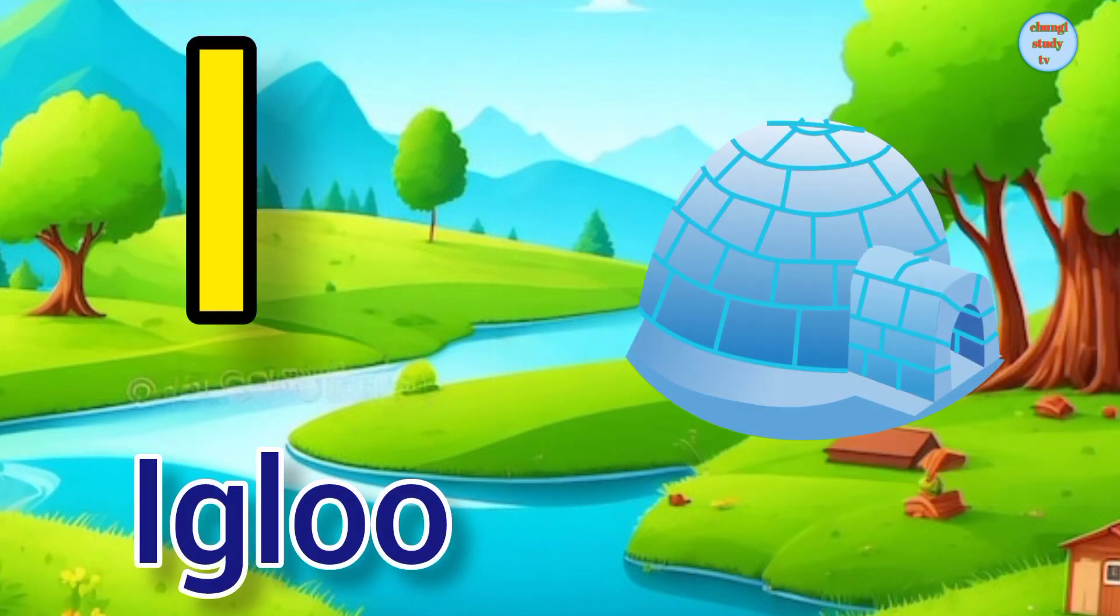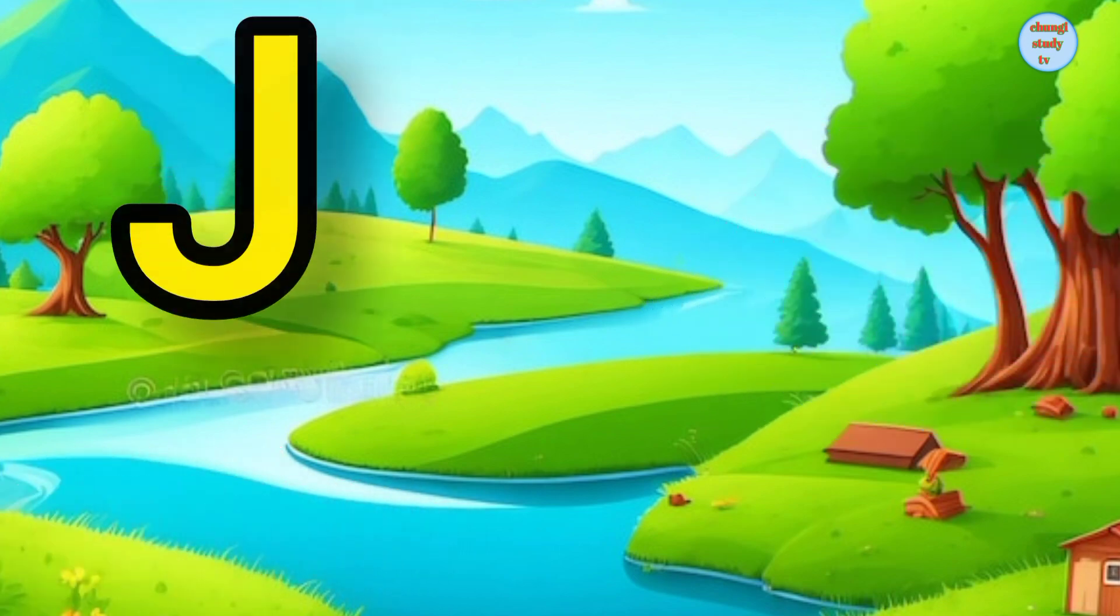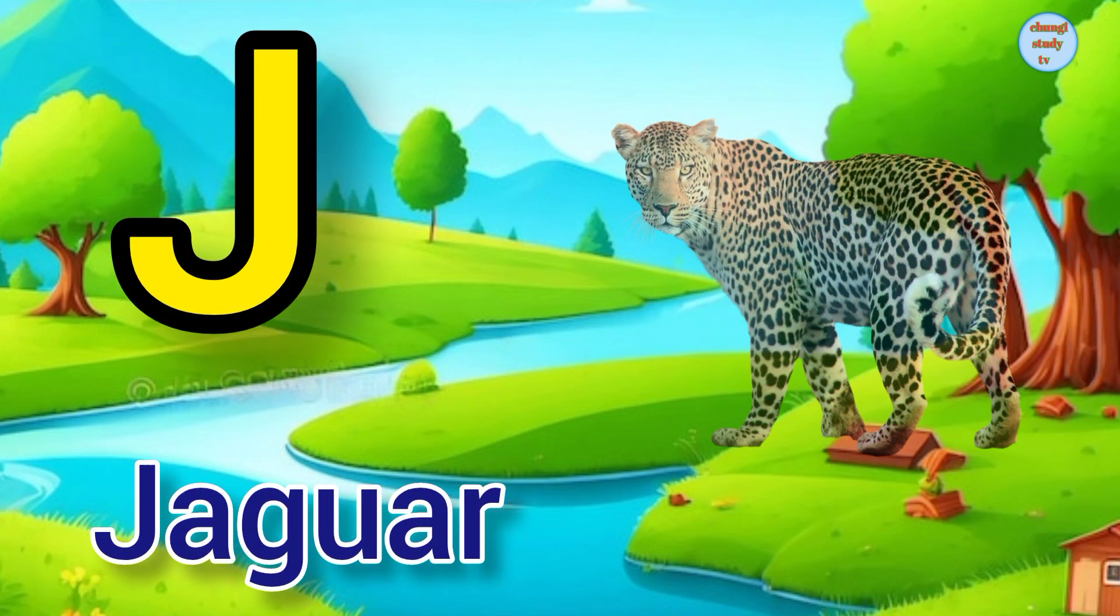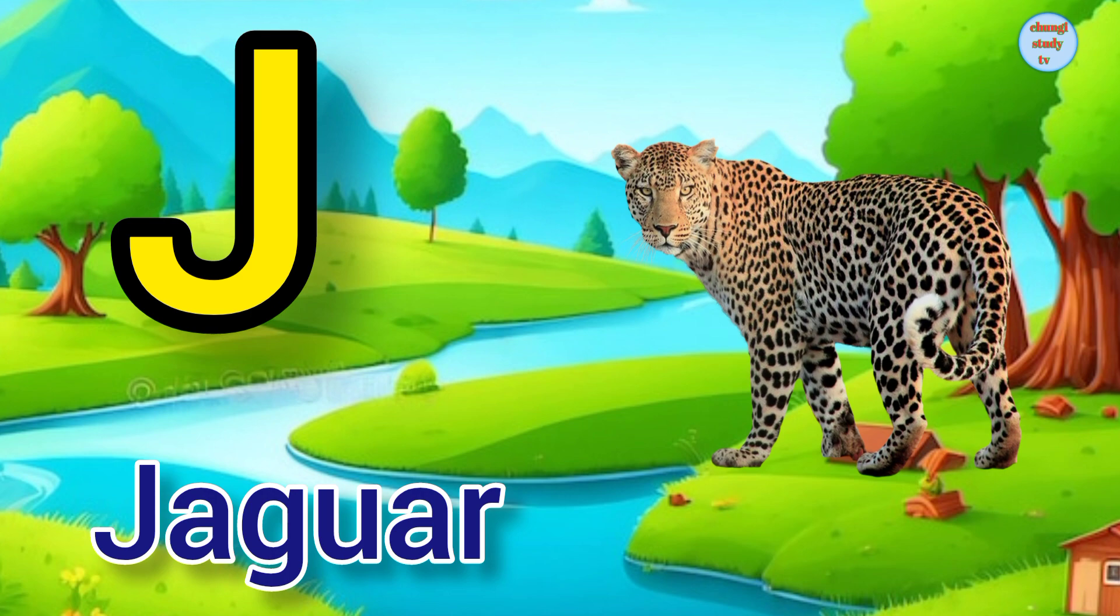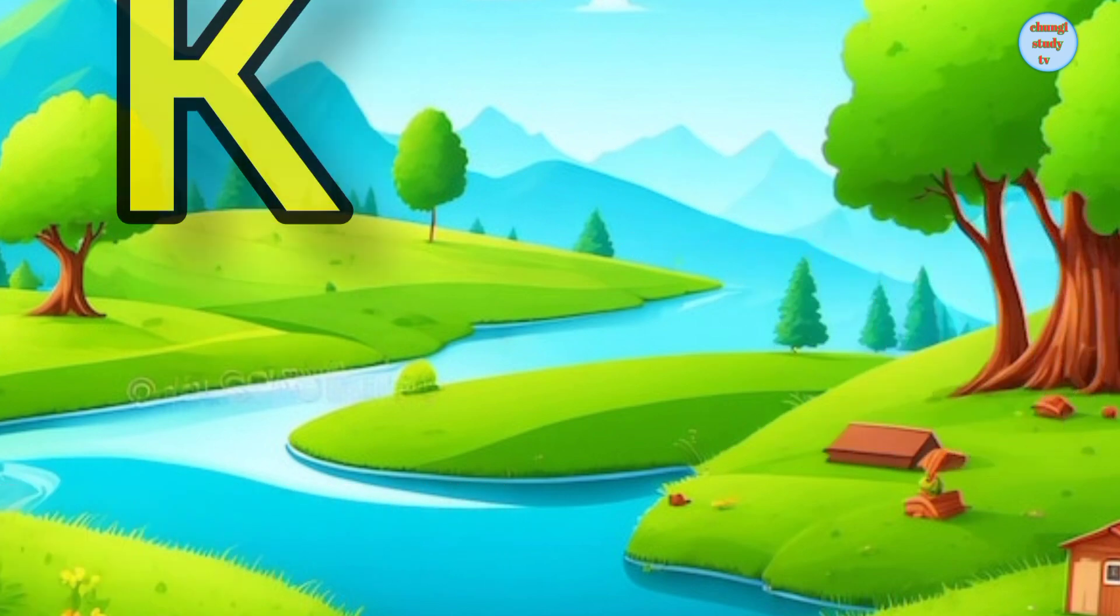I. I for igloo, Igloo means igloo. J. J for jaguar, Jaguar means tendua.